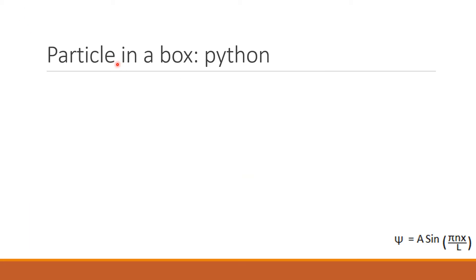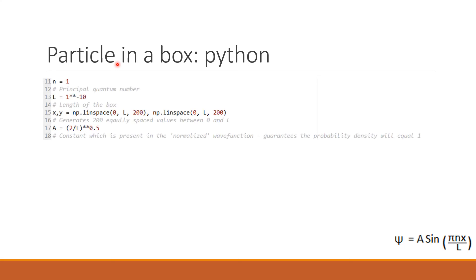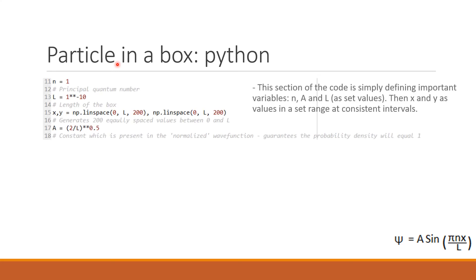The next thing we need to do is use Python to model our probability densities and wave function. To start off our code, we need to define some principal values. The quantum number n is set to one — this can be two or three, and we will see those later. We have the length of the box, then we define a set of x and y values using np.linspace, which creates 200 values between zero and L. And then we have our normalization constant A.